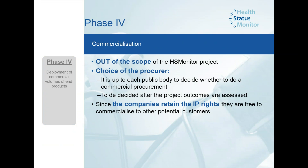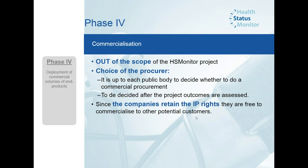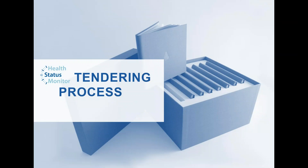Phase four commercialization is out of the scope of HS Monitor, as it would be out of scope for any pre-commercial procurement project. After the project ends, it's up to each procurer of HS Monitor and also other public bodies from Europe or across the world to decide whether to do a commercial procurement. This decision cannot be made before the project outcomes are assessed. Since the suppliers retain intellectual property rights, you are free to commercialize your solutions to other potential customers in your countries, in Europe, or anywhere else in the world.